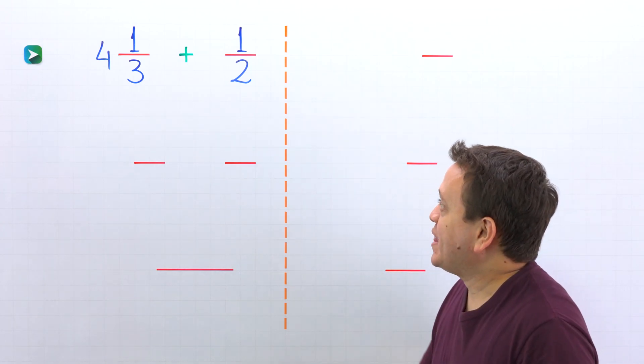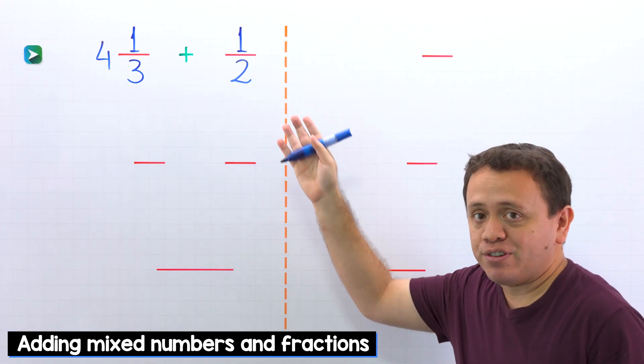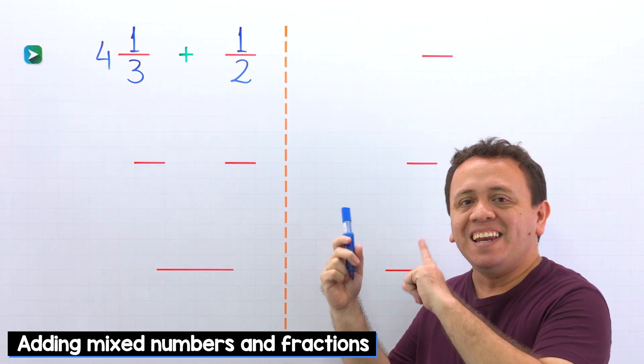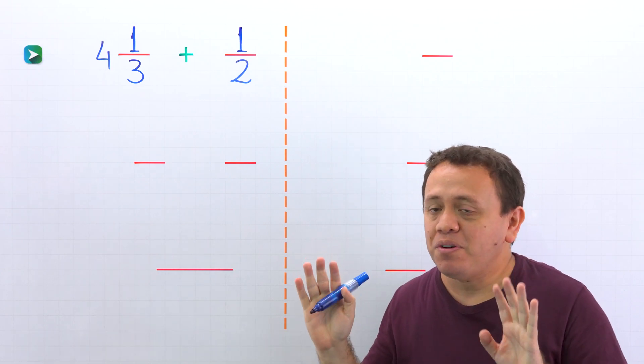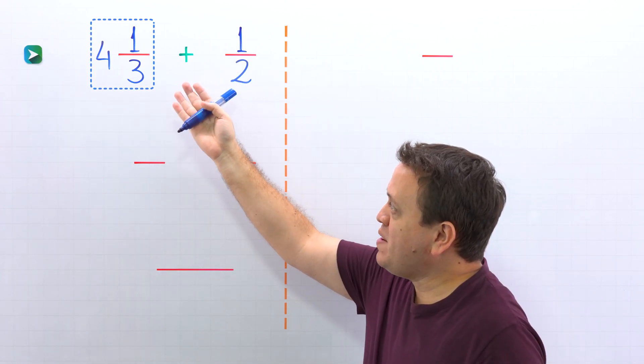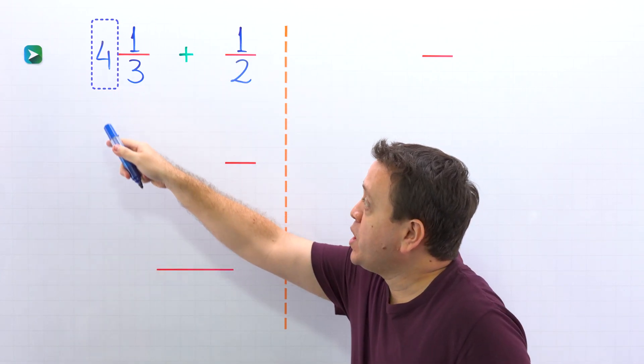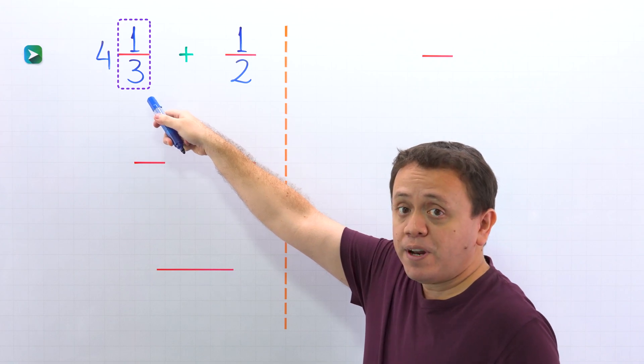Hi! Today we're going to take a look at how to add a mixed number and a fraction. Before getting into it, we need to remember that a mixed number, like this one, is the sum of a whole number and a proper fraction.